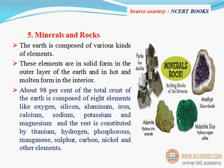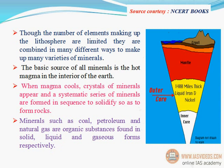Minerals and rocks: the earth is composed of various kinds of elements. These elements are in solid form in the outer layer of the earth and in hot and molten form in the interior. About 98 percent of the total crust of the earth is composed of eight elements: oxygen, silicon, aluminum, iron, calcium, sodium, potassium, and magnesium. The rest is constituted by titanium, hydrogen, phosphorus, manganese, sulfur, carbon, nickel, and other elements.